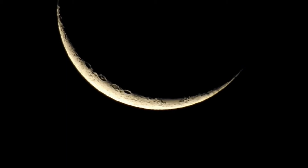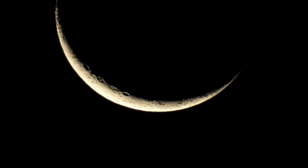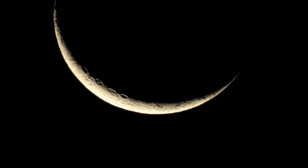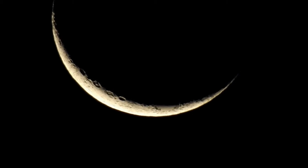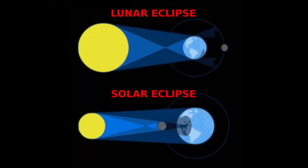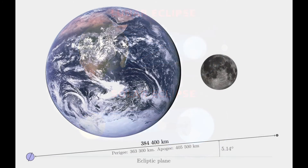Another phenomenon that would affect a spectator's view of the moon and sun from Earth are eclipses. There are two forms of eclipses: solar and lunar eclipses. Solar eclipses occur when the moon is in between the Earth and sun, and a lunar eclipse takes place when the Earth is between the moon and sun. What enables us to see a lunar eclipse is the fact that the moon's orbit is not on the same plane as that of Earth's — the moon's orbit is inclined 5 degrees in respect to the Earth's orbit.